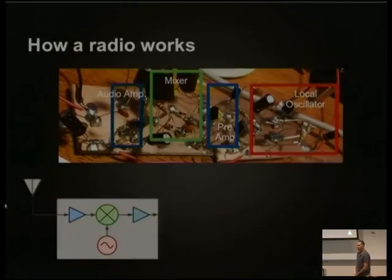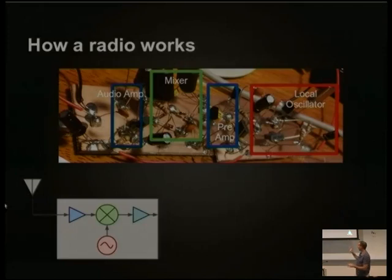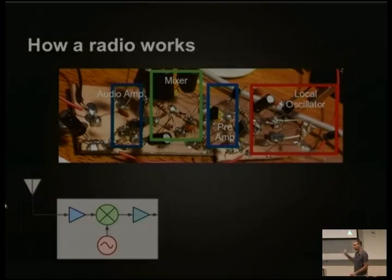Going back to our block diagram, just so you can understand the circuitry and relate it to the diagram — I've highlighted the different parts of the radio. You've got the local oscillator and the preamp providing the two signals fed into the mixer, then amplified by the audio amp. That's the radio I'm going to demonstrate to you in a few minutes.